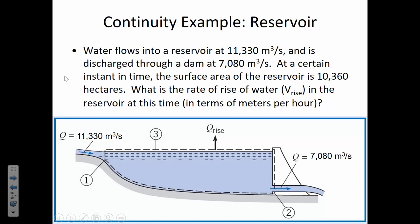We've seen some reservoir problems both in the homework and in previous in-class exercises. Let's consider this reservoir where we know the volumetric flow rate in, the volumetric flow rate out, and then it's telling us the surface area of the reservoir at a certain instant in time. Why do you suppose they put that qualifier — at a certain instant in time, the surface area of the reservoir is 10,360 hectares? It gets bigger as it goes up.